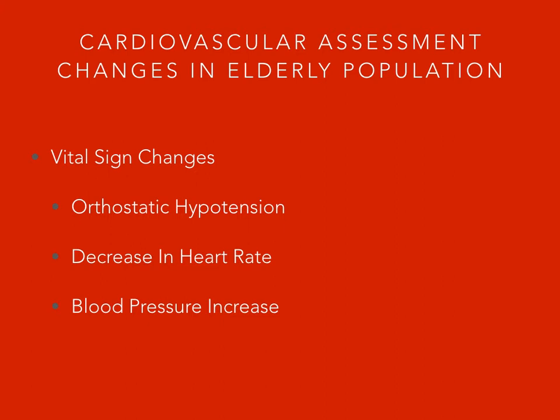Two very important lab results to pay close attention to would be the troponin levels in the elderly population. Troponin levels will let us know if there has been any type of damage to the heart. Also, although the GFR rate and BUN and creatinine have nothing to do directly with the heart, kidney function tends to decrease with age. So it is imperative that we ensure the kidneys are being adequately perfused. If we have a heart that is overworking itself, then other organs are likely not being adequately perfused, making it very important to keep a close eye on the GFR rate and kidney function.